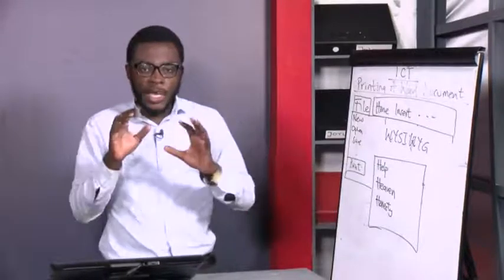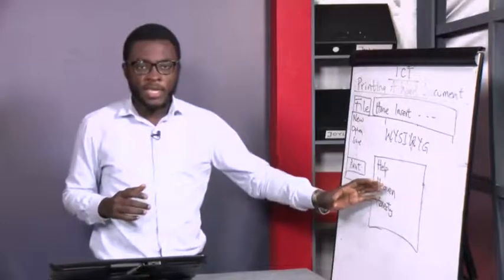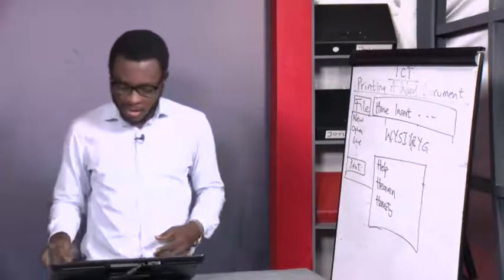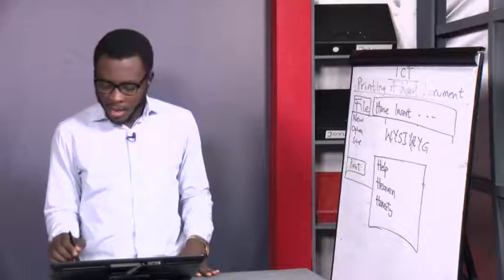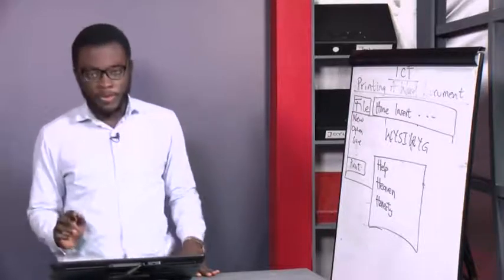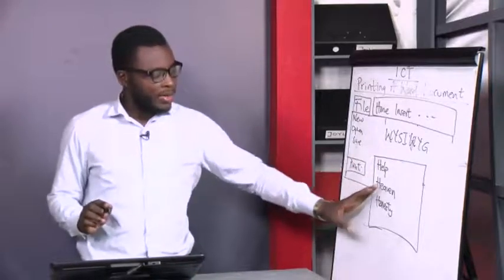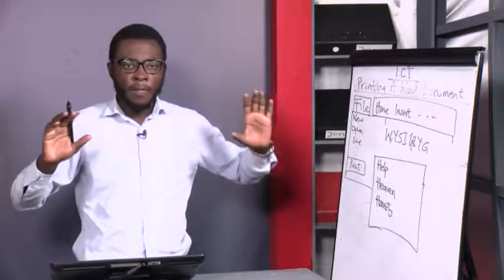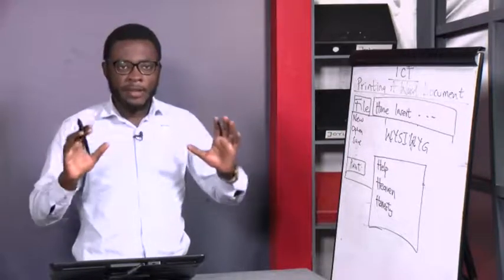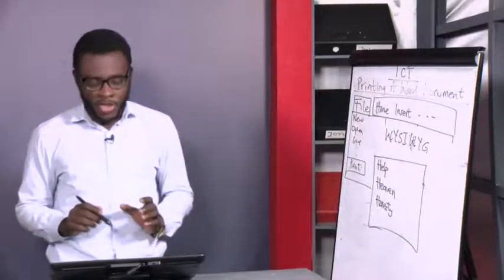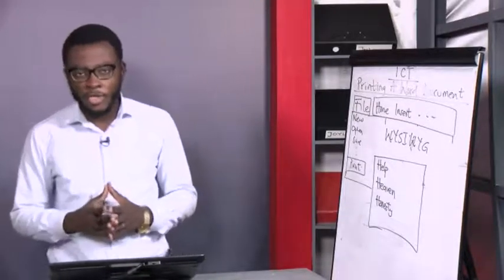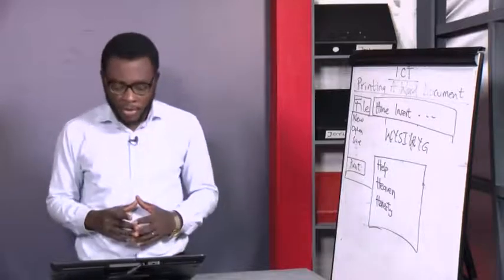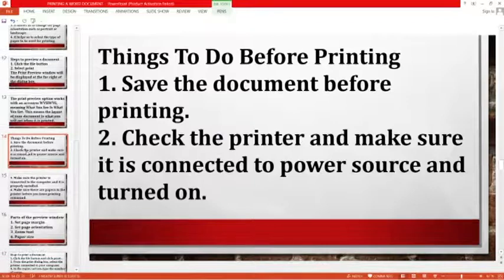What you see typed on the document is what you will get when you print it out — the layout of the document, including how the paper orientation has been set, how the margins have been set, and what paper type has been selected. Now let's look at some things you will do before you print your document. The first thing is to save the document, making sure all changes, formatting, and editing have been done.